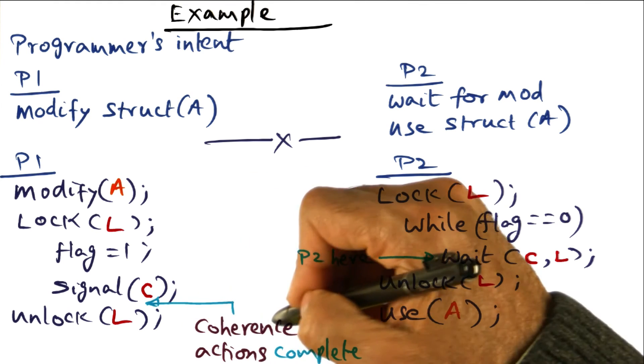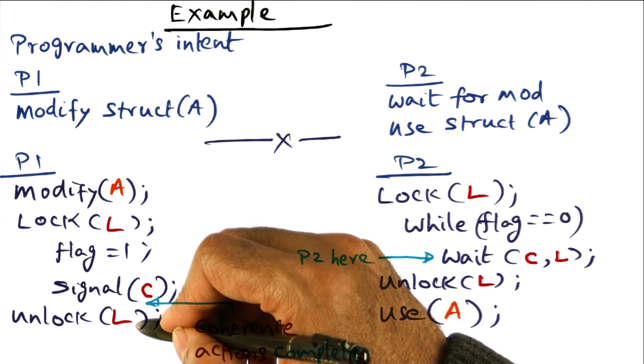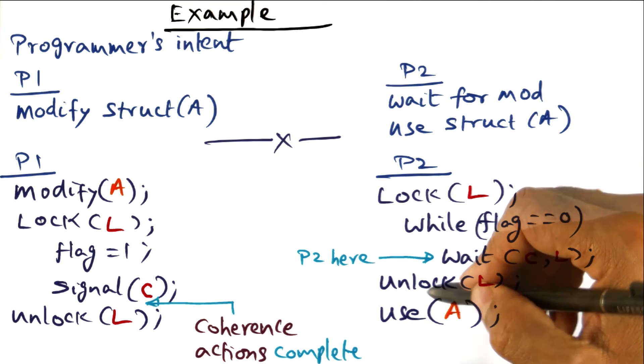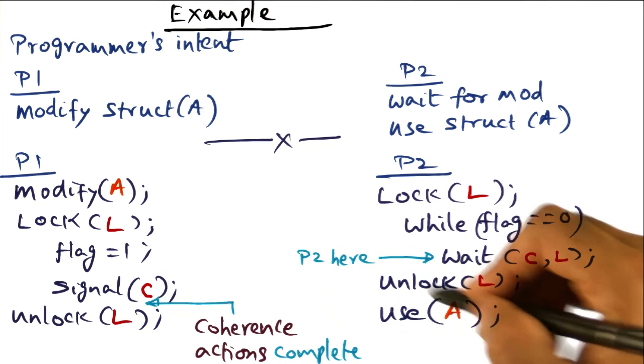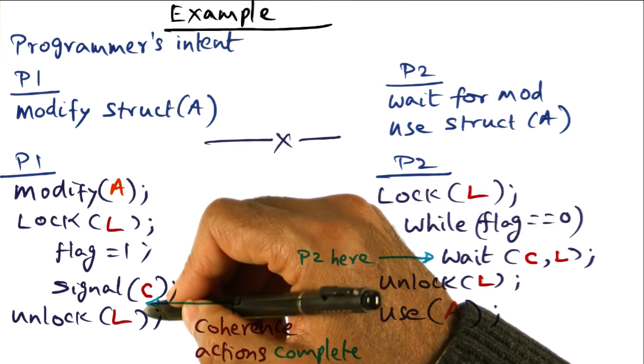At this point, the memory model will ensure that all the coherence actions are complete before releasing the lock, because once the lock is released, this guy is going to get it and immediately he'll start using the data structure that has been modified by me. So it is important that all the coherence actions be complete prior to unlocking.